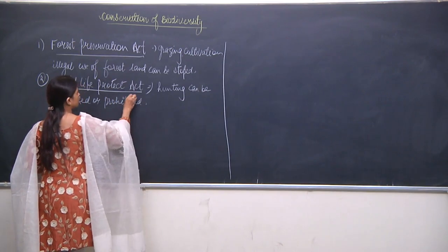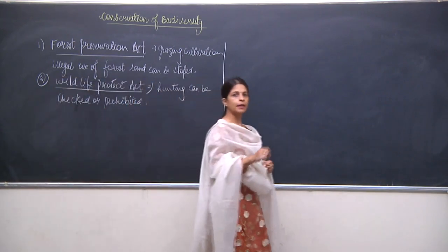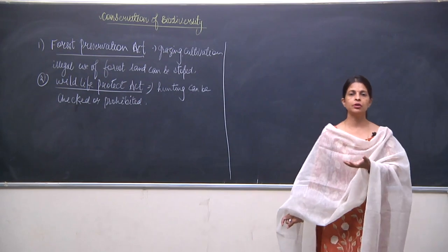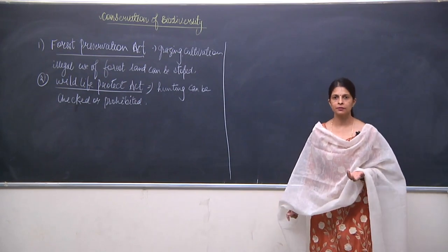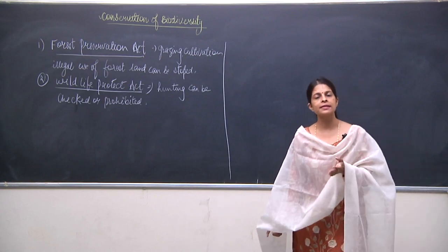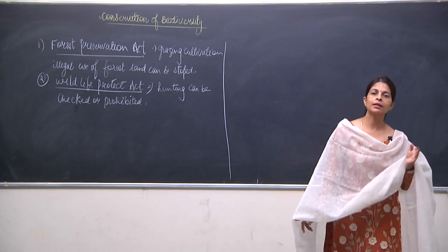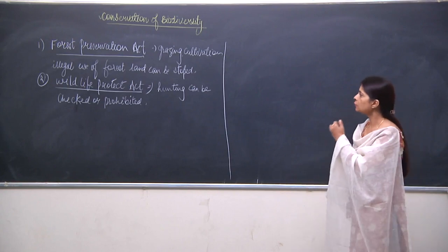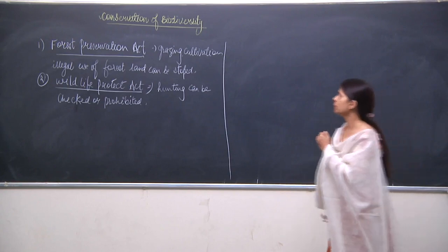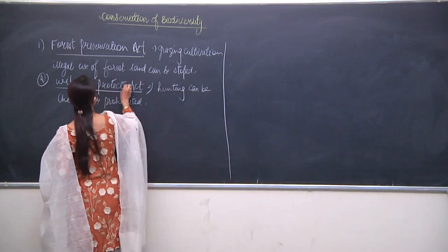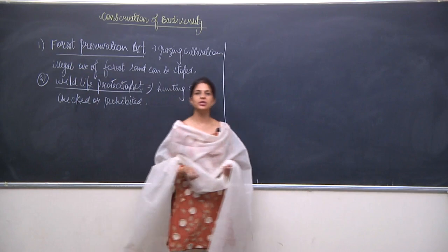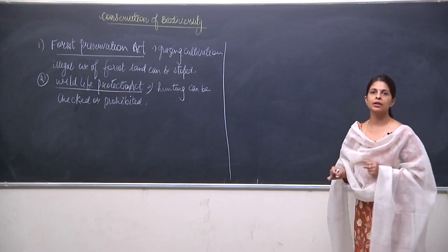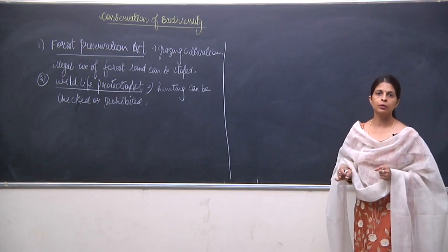There are certain fish species which are totally banned and cannot be taken even by fishermen. In the same way, the Wildlife Protection Act gives the government the power to act against those who kill animals illegally.